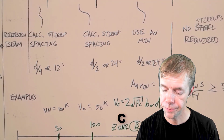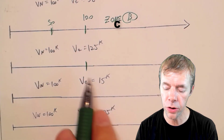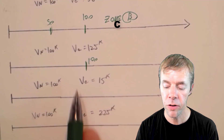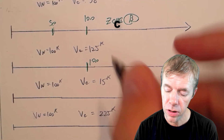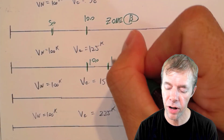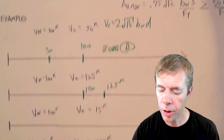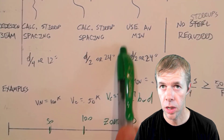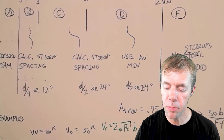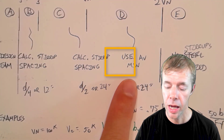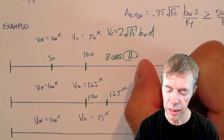Let's do another example. Again, structural analysis tells us 100 kips. This time we calculate V sub C equals 125 kips. That puts us above 100 on the graph. We go up and find we're in Zone D — we use the minimum Av min and a spacing of d over 2 or 24 inches.